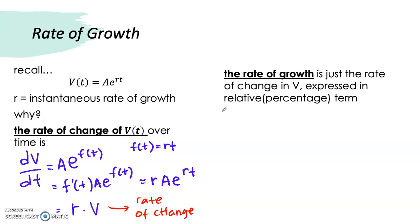So, we can write that rate of growth of V as stated here is just the rate of change in V. So, we can write dV per dT expressed in relative percentage, or expressed as ratio to the value of V itself. We know that dV per dT, we got R times V over V is just equal to R.